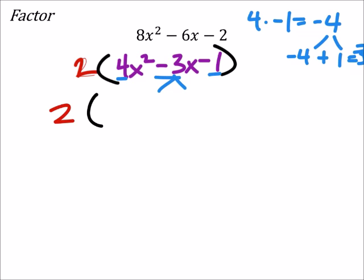So my negative 3 is going to split up into those two factors: the negative 4x plus the 1x. And I've still got my 4x squared and the minus 1.